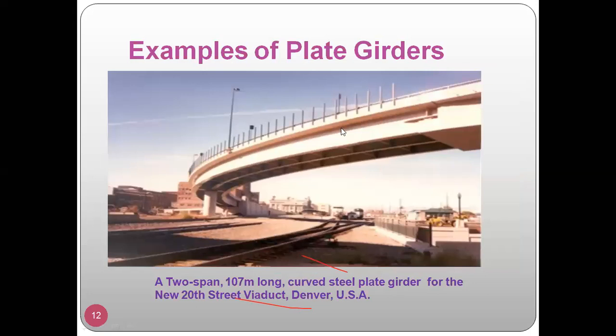This shows a railway over bridge — at the bottom of the bridge there is a railway track, and on top of it may be a road.